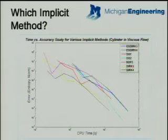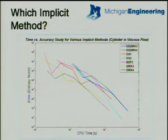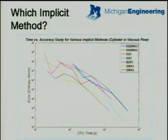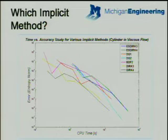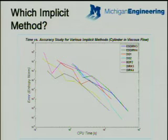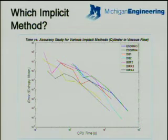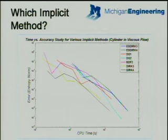Now, a legitimate question to ask is which implicit method is the most efficient one of the ones that we have developed. The plot shown on this slide is a time accuracy study for the implicit methods that have been developed. As you can see, various implicit methods have been used to solve the same problem, and their time accuracy behaviors have been shown on this plot. The DRRK3 and DRRK4 methods are showing much more competitive behavior in comparison to others because they take much less time in order to obtain highly accurate solutions.